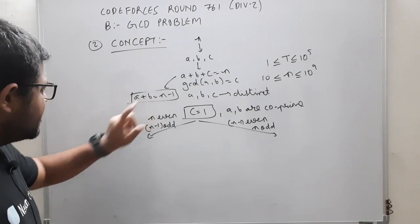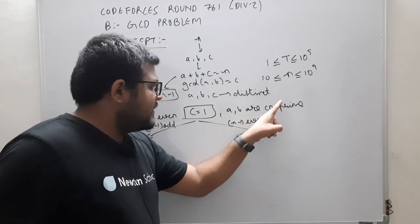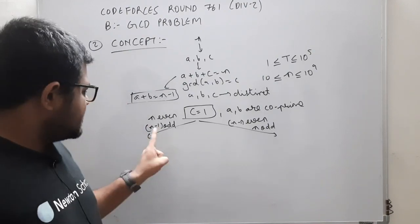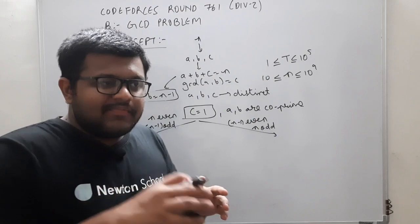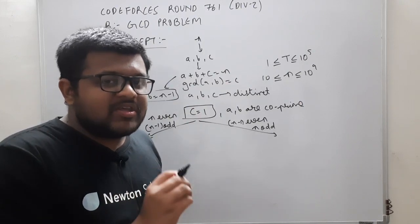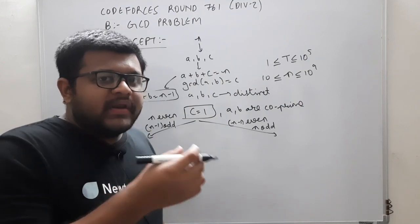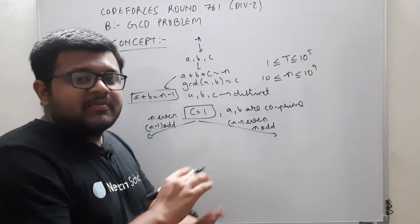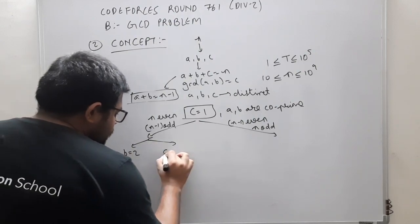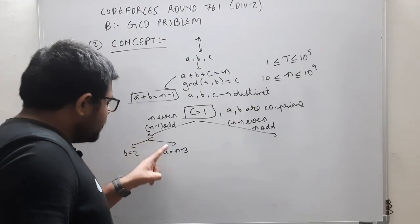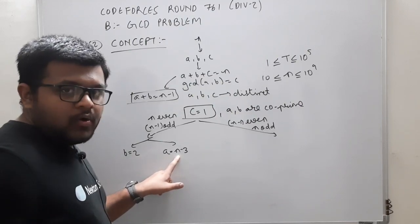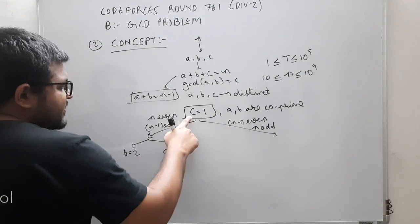Now I need to divide n minus 1 into two parts a and b such that a and b are co-prime, so their GCD equals 1. If n minus 1 is odd — meaning n is even — and I take out 2 (an even number), the remaining is odd. So n minus 1 minus 2 = n minus 3, which is also odd. Two and n minus 3 have GCD 1. So all conditions are satisfied: a = n minus 3, b = 2, c = 1. GCD(a, b) = c is satisfied, and a plus b plus c = n.